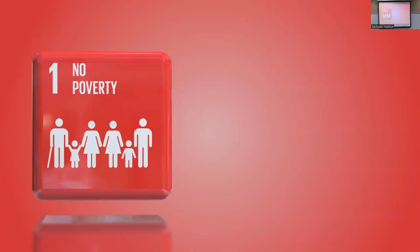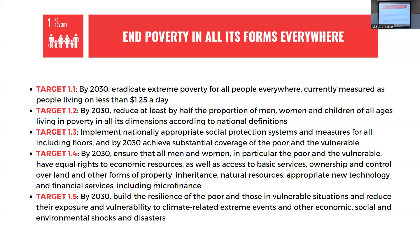SDG One is No Poverty. SDG One aims to end poverty in all its forms everywhere. The UN has a website where they have all of these targets listed. Every year, each country has to report back to the UN on how they have progressed. Target 1.1 aims to eradicate extreme poverty for all people everywhere, currently measured as people living on less than $1.25 a day.